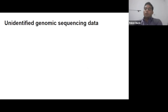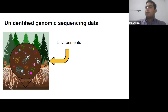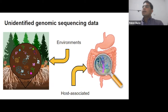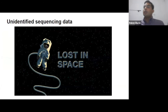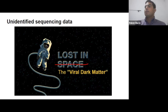On the other hand, maybe you are studying a microbiome in a specific environment. It doesn't really matter if the sample comes from environments such as soil or a host-associated ecosystem — you suddenly realize that a huge portion of your genomic data doesn't match with anything reported in current databases. You feel like you are lost in space. This is also called the viral dark matter.